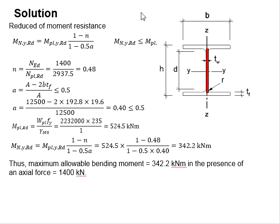Thus, the maximum allowable bending moment under the axial force of 1400 kN is 342.2 kNm.